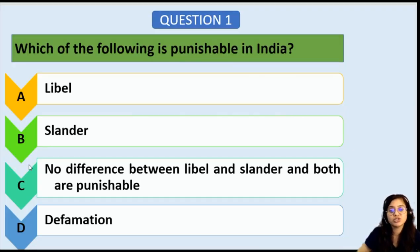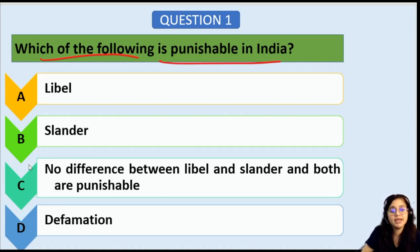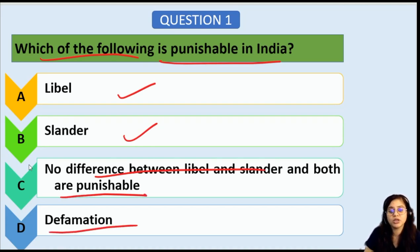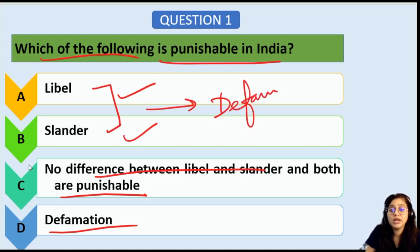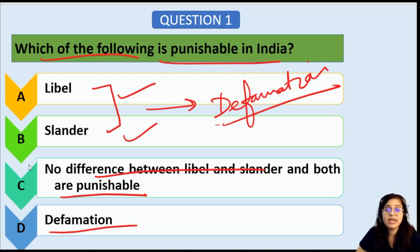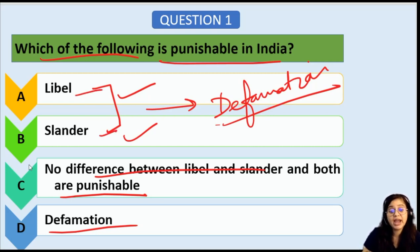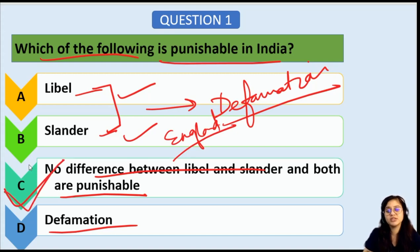Question number 1: Which of the following is punishable in India — libel, slander, or is there no difference between both? Now, libel and slander are both forms of defamation. Defamation is something said that will harm someone's reputation. In India, there is no difference between libel and slander and both of them are punishable. It is only in England where the difference exists. Therefore, the answer is option C — there is no difference between the two and both are punishable.